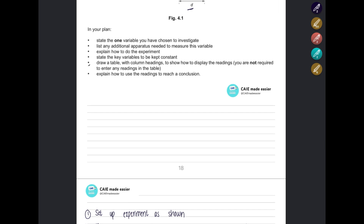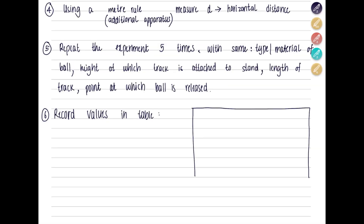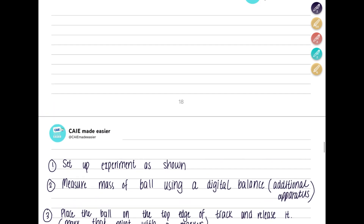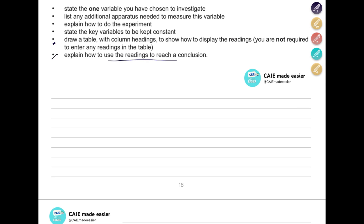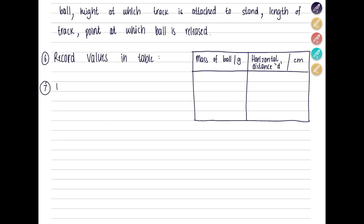Record the values in a table — they've also asked you to draw a table. In the table, the independent variable comes first: the mass of the ball in grams, then the horizontal distance d with its unit. To reach a conclusion, plot a graph with the dependent variable — horizontal distance — on the y-axis and the independent variable — mass of ball in grams — on the x-axis.